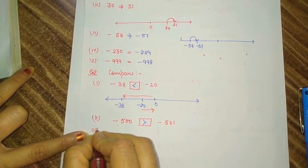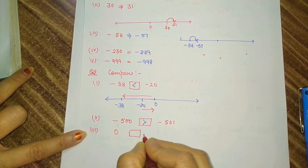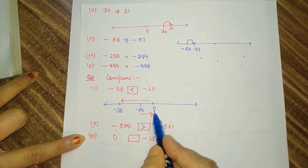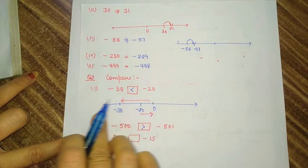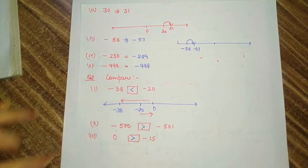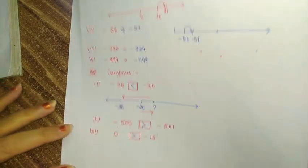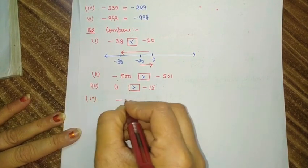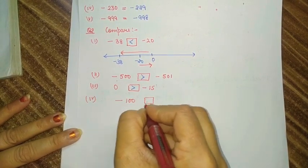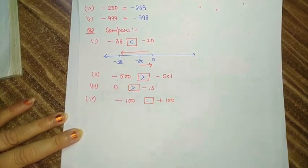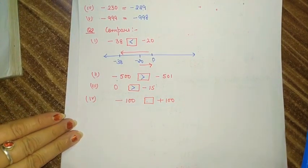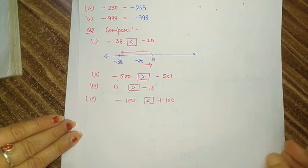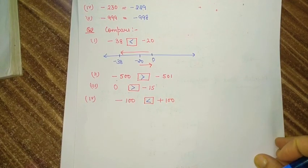Third part: comparing zero and minus 15. Zero is always bigger than all negative numbers, so here we can easily see zero is bigger than minus 15. The last part of this question: minus 100 and positive 100. We already know that positive numbers are greater than negative numbers, so it is clear that positive 100 is bigger than minus 100.